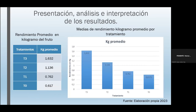Para el rendimiento promedio en kilogramos del fruto del repollo, observamos en la tabla y el gráfico que el tratamiento 3 obtuvo un promedio de 1,632 kg; el tratamiento 2 de 1,136 kg; el tratamiento siguiente de 0,72 kg; y el tratamiento 0 de 0,617 kg. El mejor rendimiento se obtuvo con el tratamiento 3.